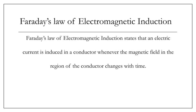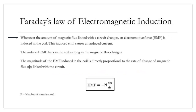Moving on, Faraday's law of electromagnetic induction states that an electric current is induced in a conductor whenever the magnetic field in the region of the conductor changes with time. The change in magnetic field implies that the magnetic flux linked with the conductor keeps on changing. As the magnetic flux changes, an EMF is induced in the conductor, which in turn produces a current. Mathematically, the EMF induced is equal to the product of the number of turns in the coil and the rate of change of magnetic flux with time.